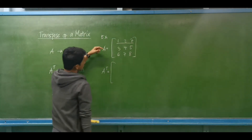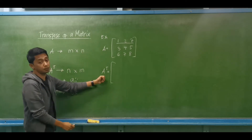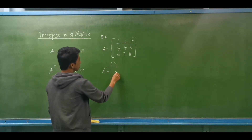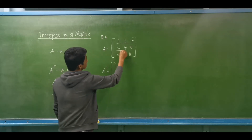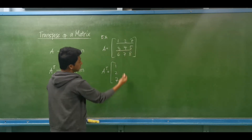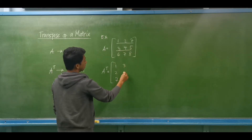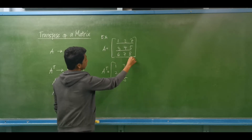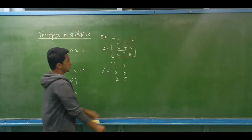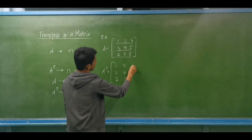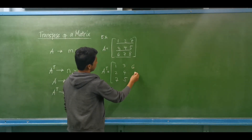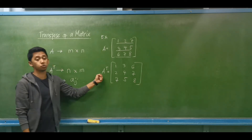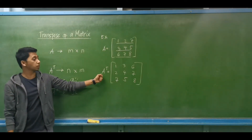The first row of matrix A will be the first column of the transpose: 1, 2, 7. The second row will be the second column: 3, 4, and 5. The third row of the original matrix will be the third column of the transpose matrix: 6, 7, and 8. So this will be the transpose of matrix A.